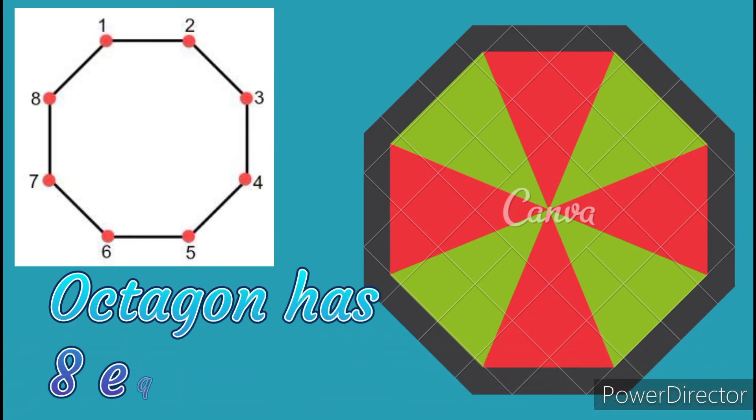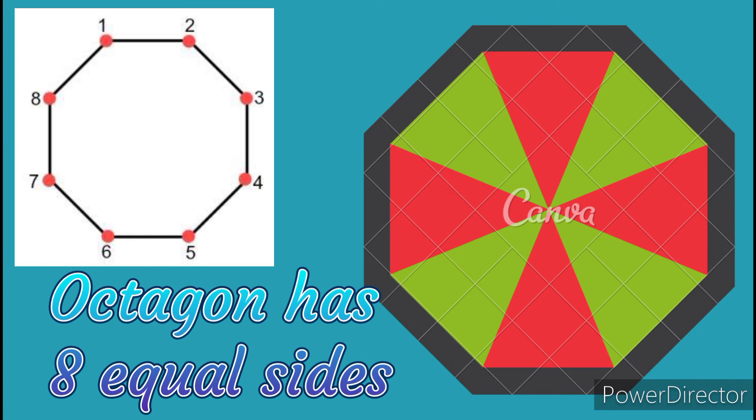Octagon. Octagon is called eight-gon and it has eight equal sides: one, two, three, four, five, six, seven, and eight. Octagon has eight equal sides.